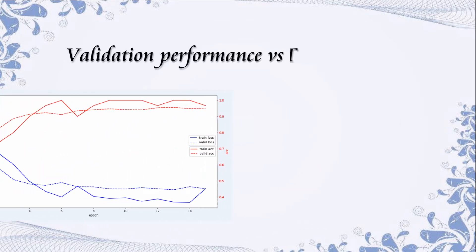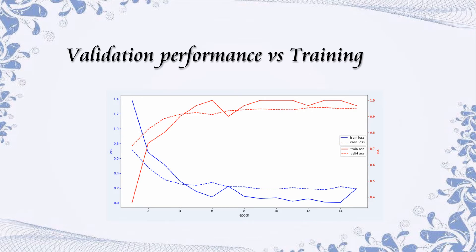We also performed validation on our training dataset, using 20% of our data for validation. We run a validation pass after each training epoch. At the end, the validation loss is slightly higher than the training loss, and the validation accuracy is around 0.95 to 0.96. The validation accuracy is considered to be the generalization accuracy, meaning our model should have about 96% accuracy in real recognition.